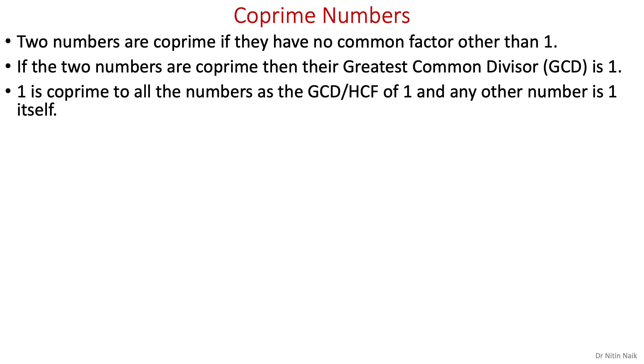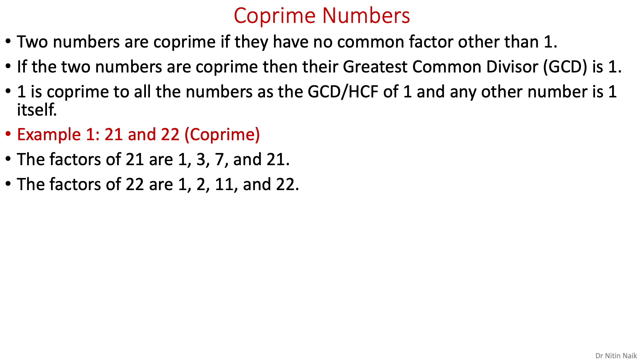Let's look at two examples: one is co-prime and the other is not. The first example is co-prime, where the two numbers are 21 and 22. We need to check whether they are co-prime or not. How do we do that? Find the factors of 21: the factors of 21 are 1, 3, 7, and 21. Find the factors of 22: